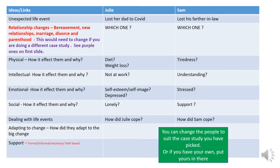I picked Sam and Julie. Julie lost her dad to Covid, and Sam lost his father-in-law. As you can see, I've drawn a table that includes everything we have covered so far on this course. The life event is unexpected because Julie lost her dad to Covid. They've had a relationship change because they've been through a bereavement. Then I need to identify how it's affected them physically, intellectually, emotionally and socially. I've identified some areas with question marks, but I would need to explain why those areas are affected because of losing a parent.